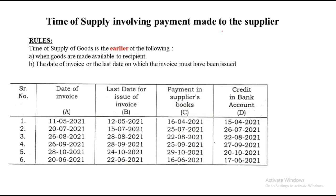Time of supply involving payment made to the supplier. The rules are it has to be the earlier of: goods made available to the recipient and date of invoice, or the last date on which the invoice has been issued. In the question they are giving you date of invoice, last date of invoice, payment to the supplier, and credit in bank account. The moment you see 'payment in supplier's book,' understand it is a sum involving payment made to the supplier. In our case, date of invoice and last date of issue — among these two, whichever is earlier will be your time of supply.